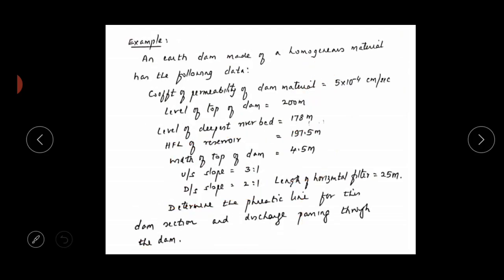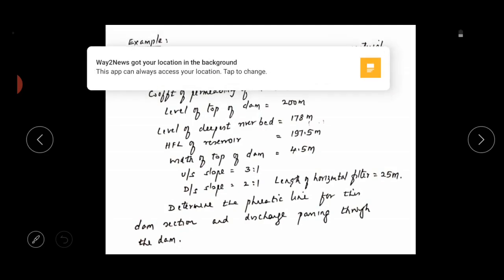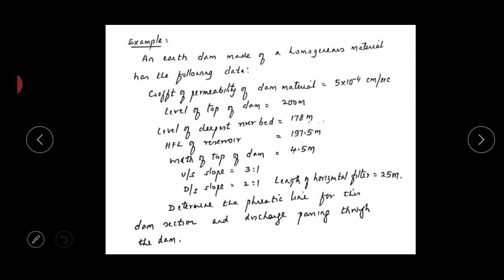Next we solve a problem. An earthen dam is made of homogeneous material. The coefficient of permeability of the dam material is 5 × 10⁻⁴ cm/s. The profile data includes top width, RL of the top, RL of high flood level, side slopes, and length of horizontal filter. We are asked to determine the phreatic line for this dam section and the seepage discharge.